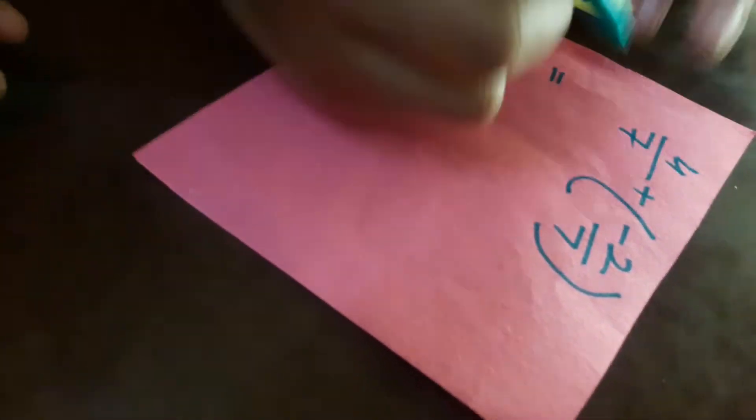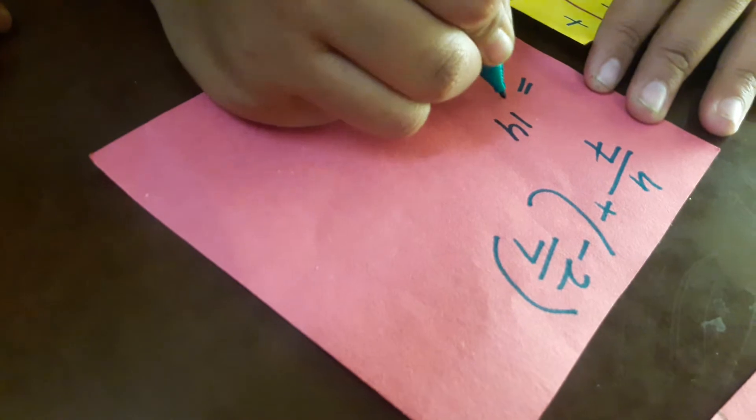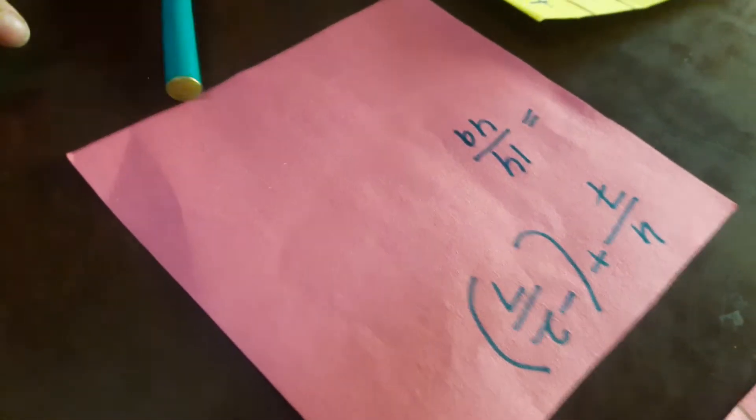So 14 by 49. Why are you writing 49 as a denominator? Because the grid has 49 equal squares.